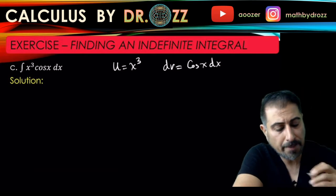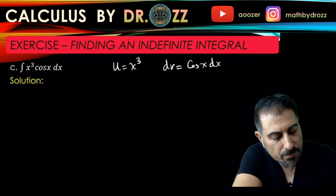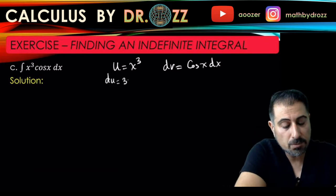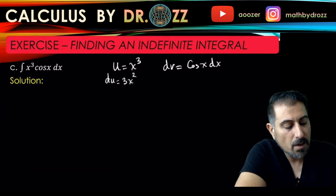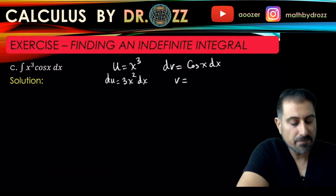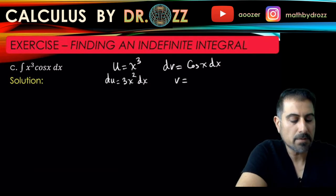I'm going to look at du, that is 3x squared, which is the derivative of x cubed dx. And here I'm going to integrate cosine x and that is in fact sine x.